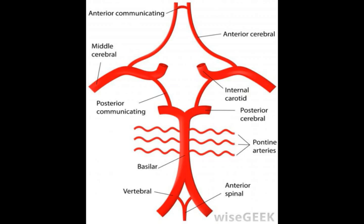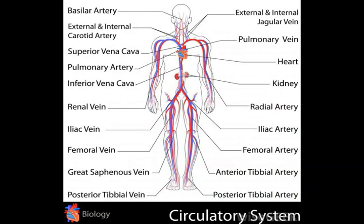At the middle of the peduncles is the interpeduncular fossa. This is a trench at the base of the brain with the shape of a diamond. The basal cistern also envelops the circle of Willis.